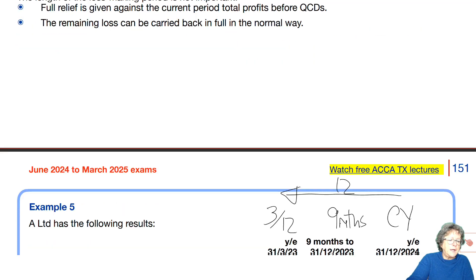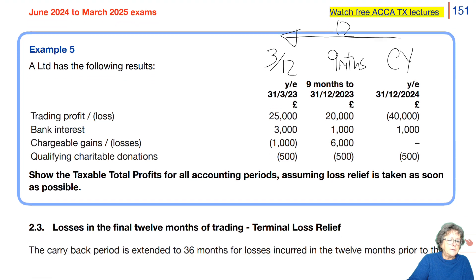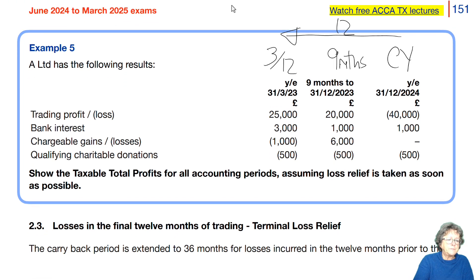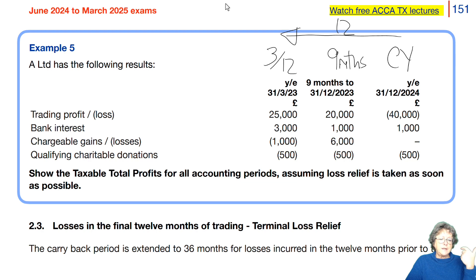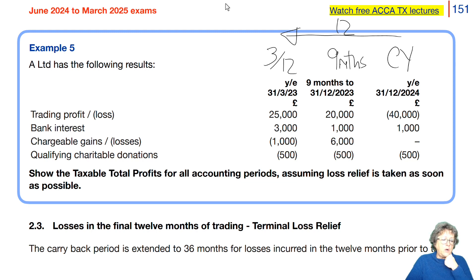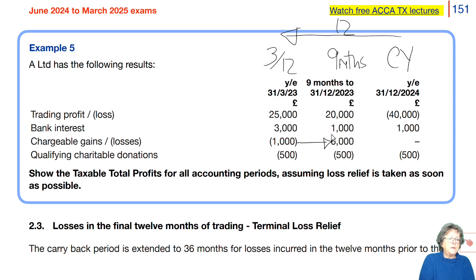Let's have a look at example number five. We have a year-ended March 2023 with a profit, bank interest, a capital loss, and QCDs. Nine months to December 2023 with a profit, some income, some gains, and a QCD. In the year to December 2024, we had a loss, some bank interest, no gains, and a QCD. That is obviously going to be set off against the earlier periods.